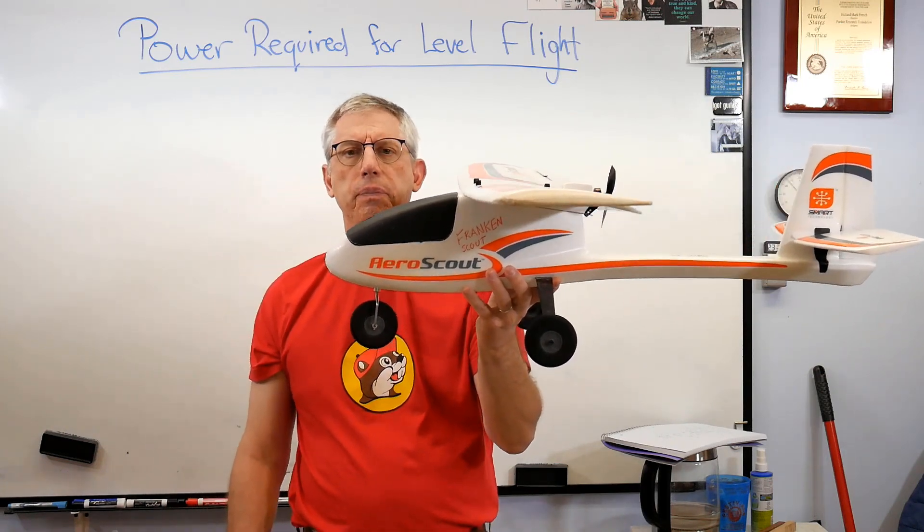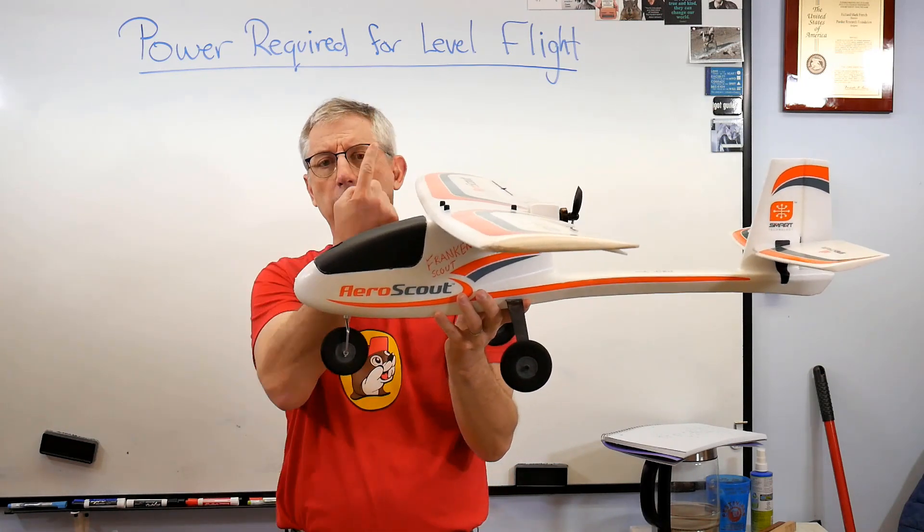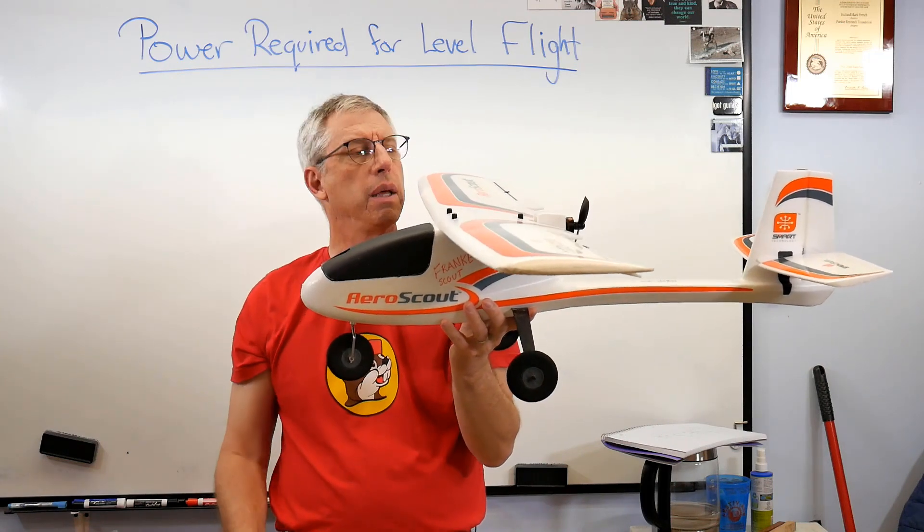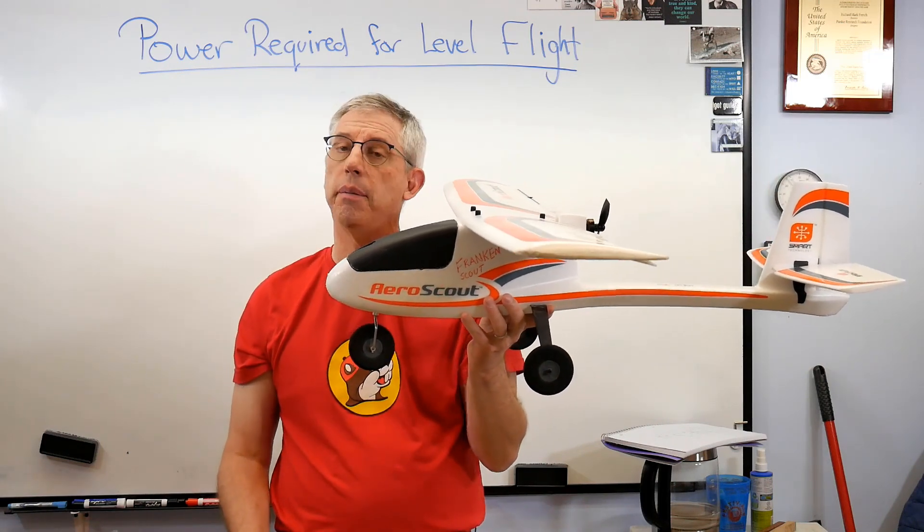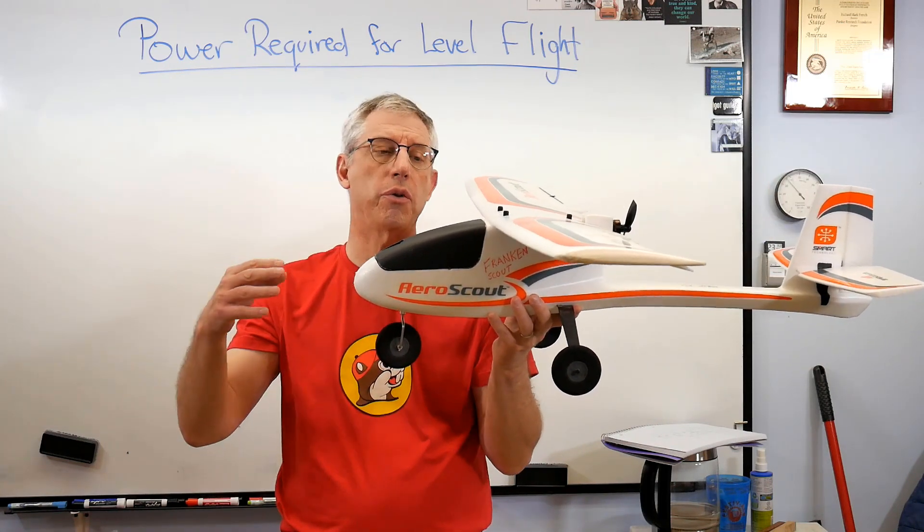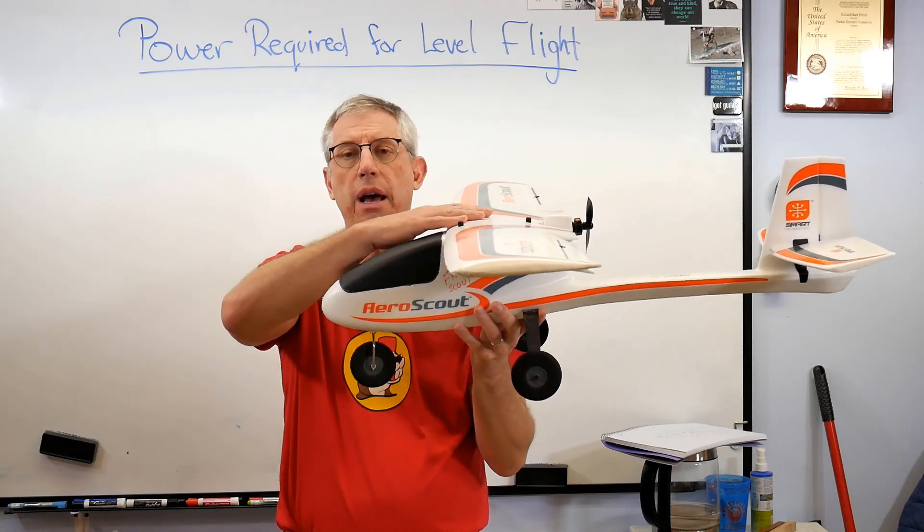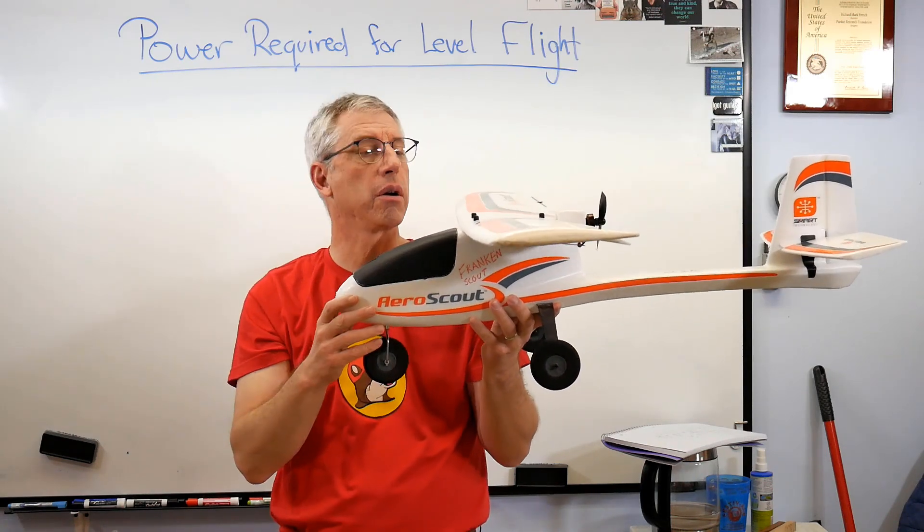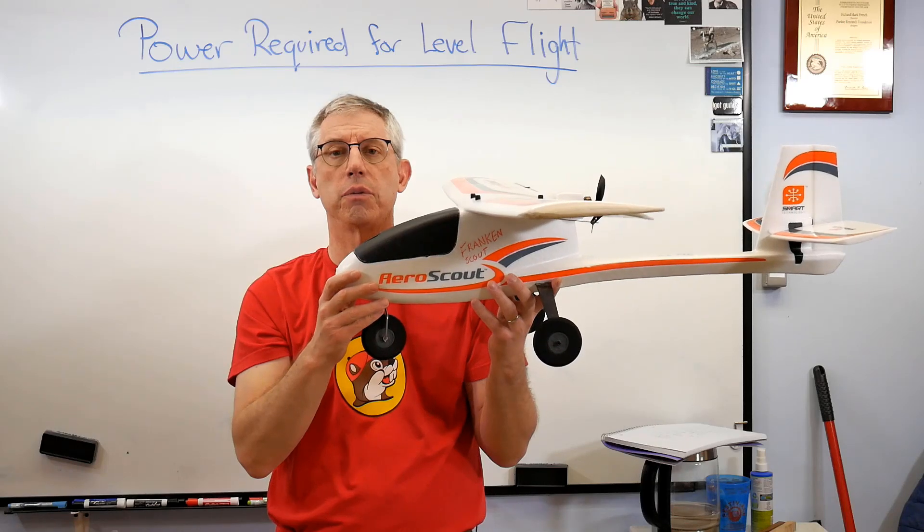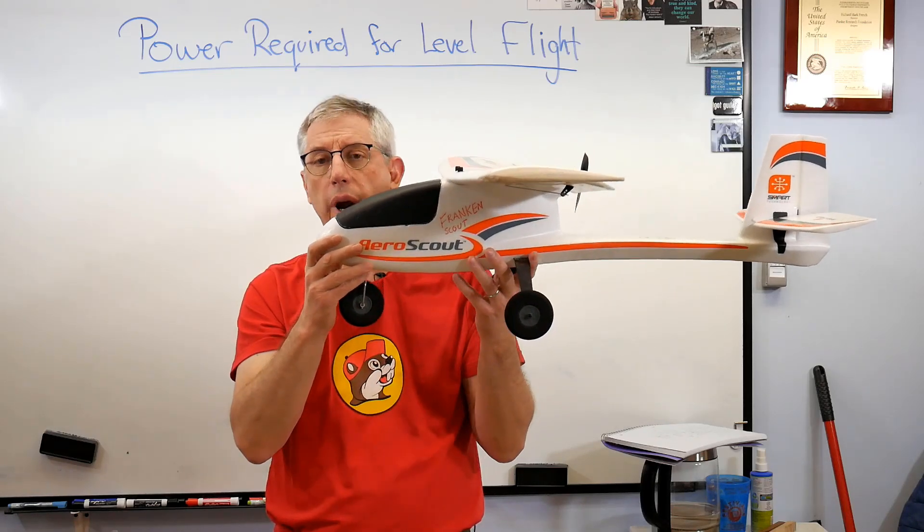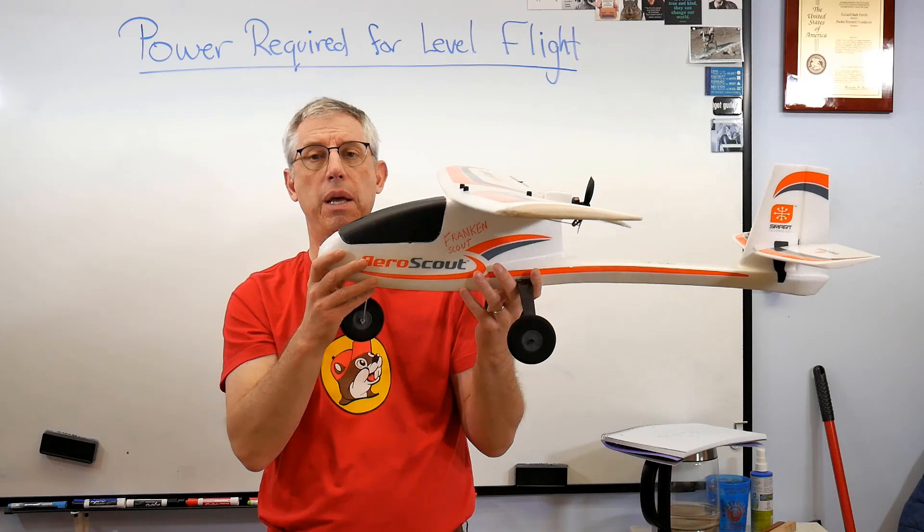The wings make lift that equal the weight and there's a drag force. Remember there's two kinds of drag - there's form drag which is just when you get right down to it the sheer stress of the air flowing past the surfaces of the plane, and there's also induced drag.